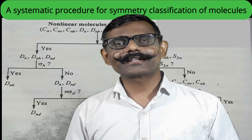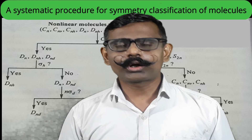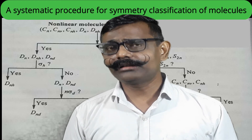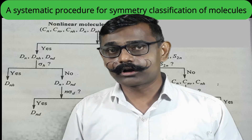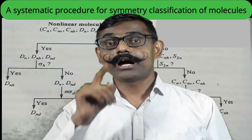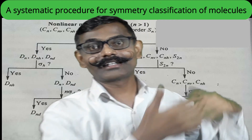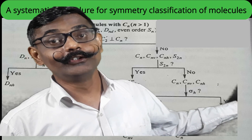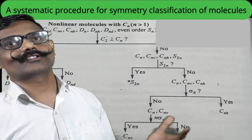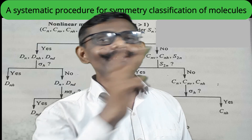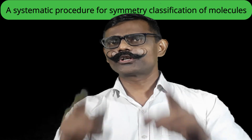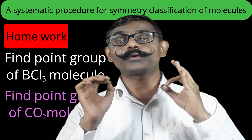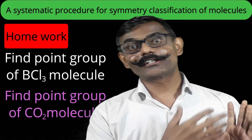For example, take the water molecule. Is it linear? No. Is there a proper axis with n > 1? Yes, a C2 axis — so it's in the third category. Are there perpendicular C2 axes? No. Is there an improper axis? No. Is there a horizontal plane? No. Are there vertical planes? Yes. So the point group is C2v. Likewise for other molecules. Practice questions: find the point group of BCl3 and CO2 using this flowchart.